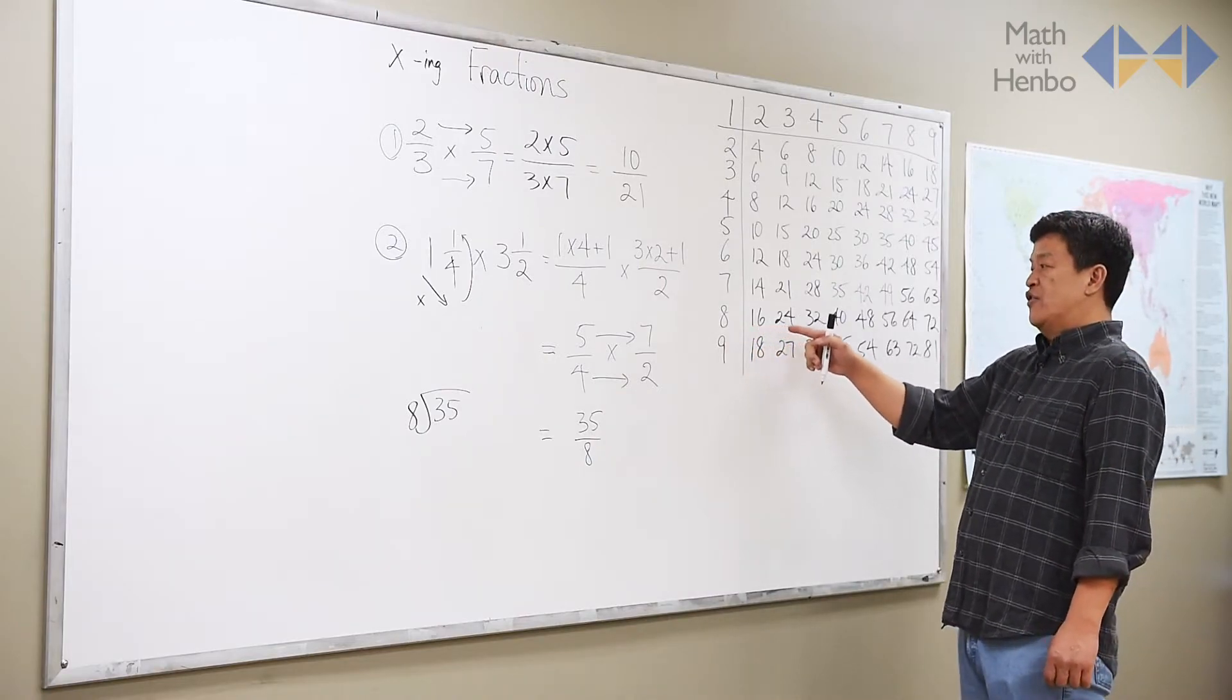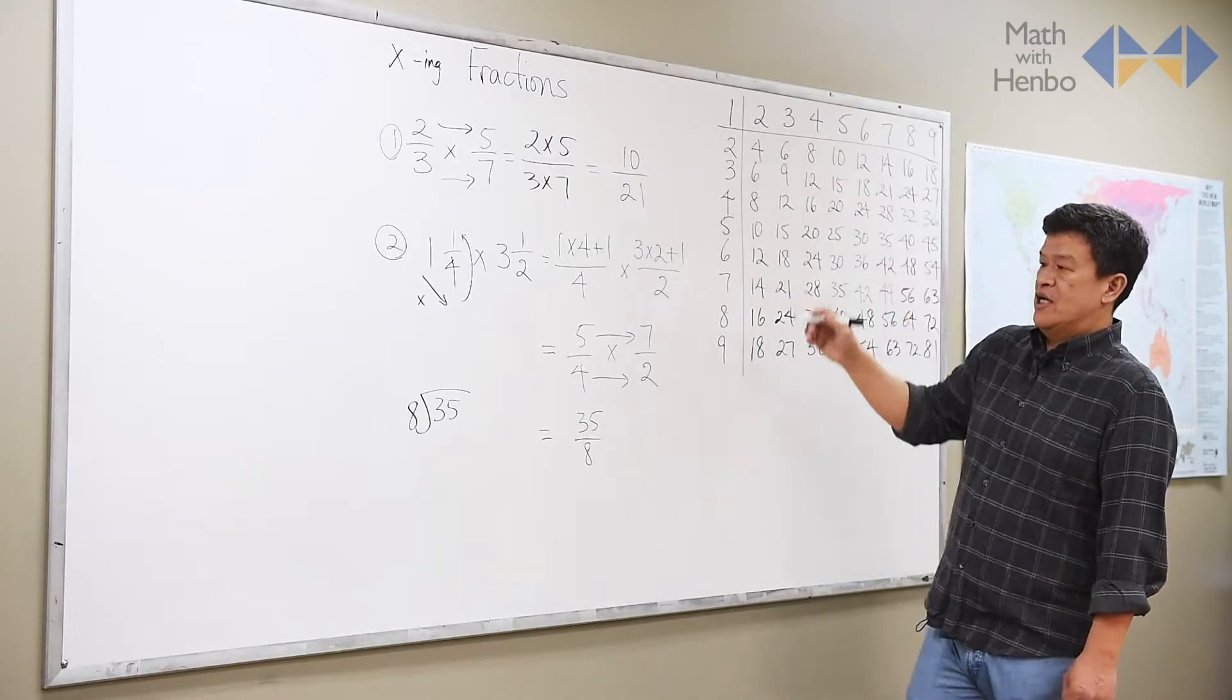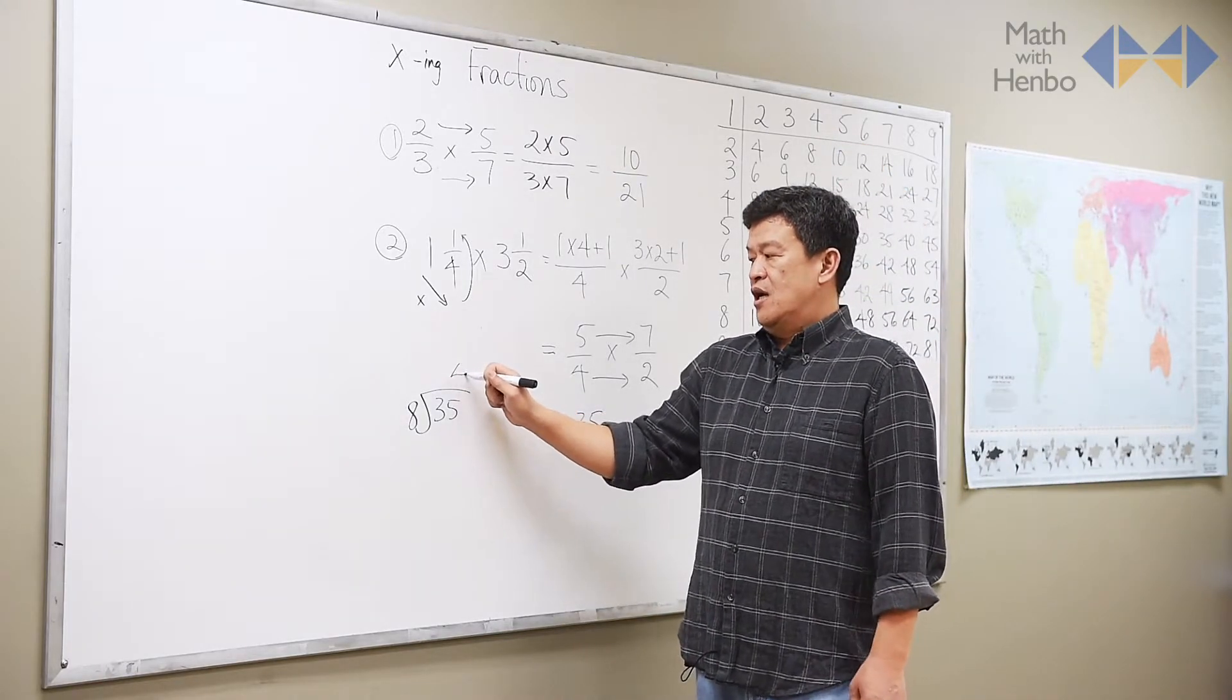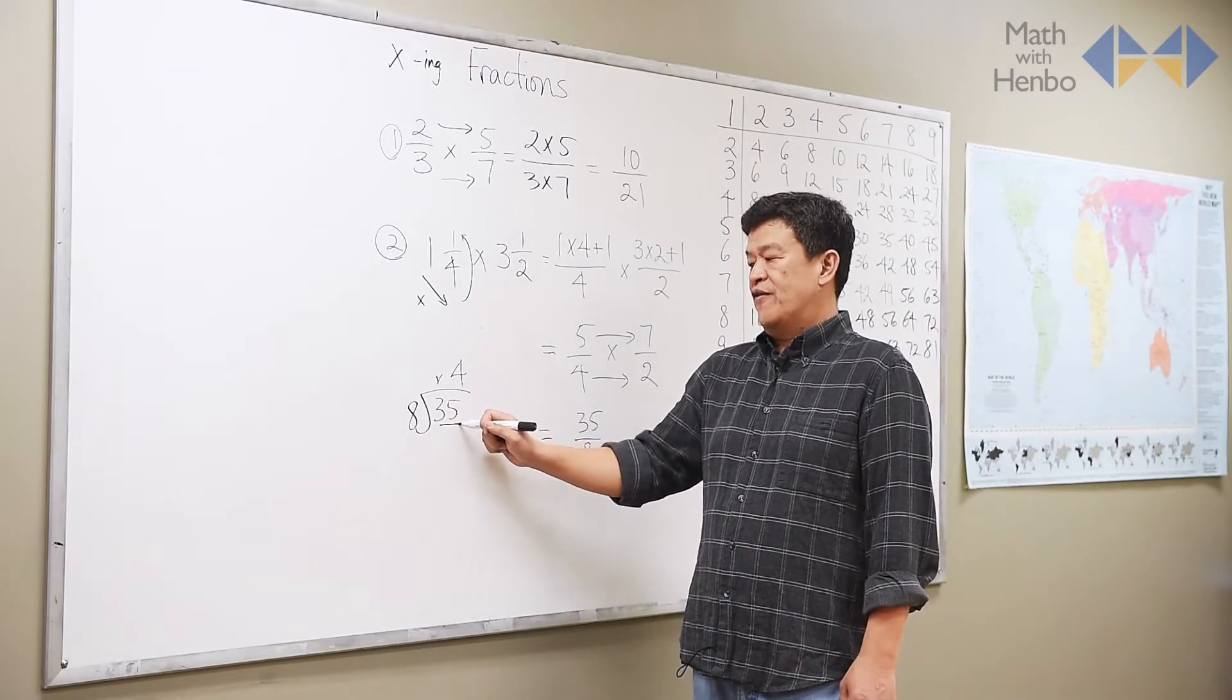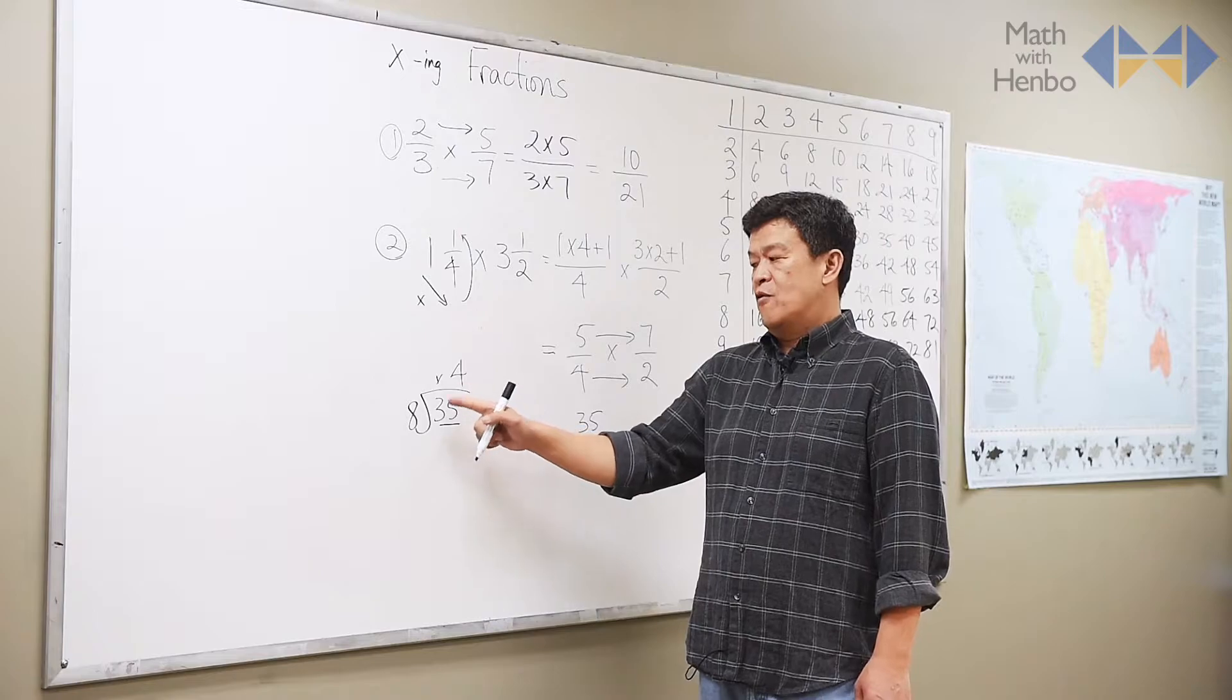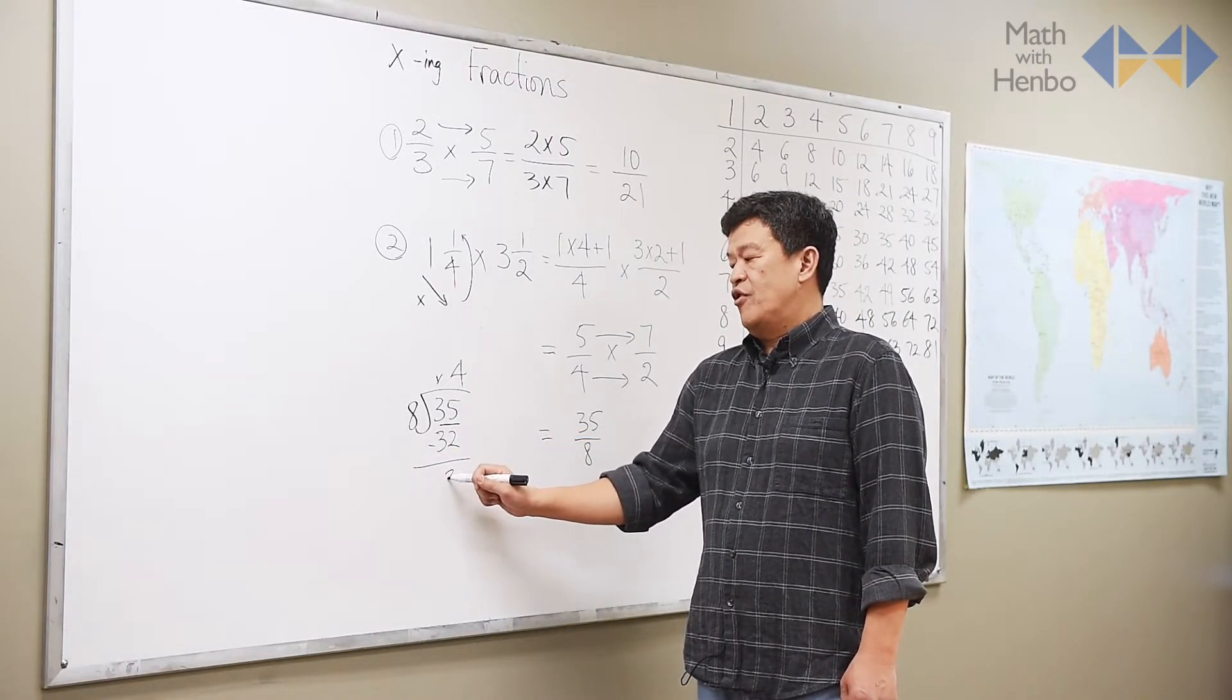So, the final answer that we want to put up is above the 4, since 8 doesn't go into 3, but goes into 35. 4 goes up there. 4 times 8 is 32. When you subtract, you get 3 remainder.